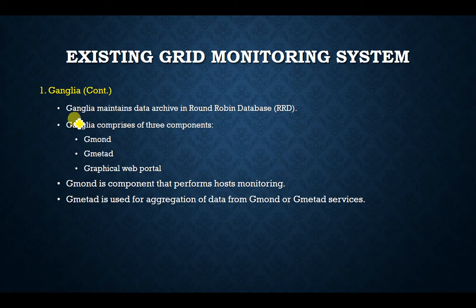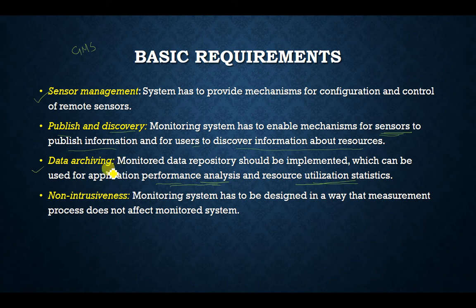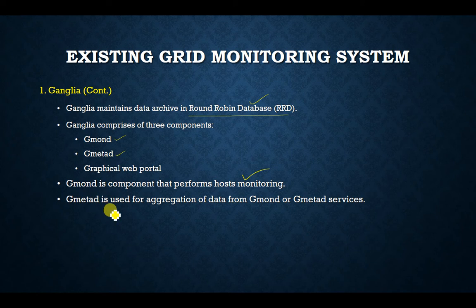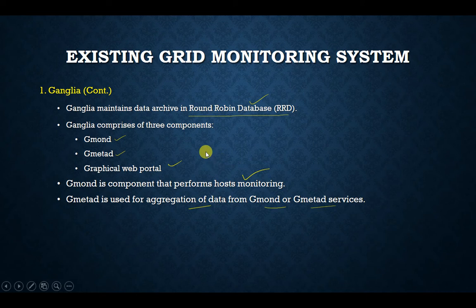Ganglia comprises three components: gmon, which performs host monitoring; gmetad, used for aggregation of data from gmon or gmetad services; and a graphical web portal through which users can interact with the grid monitoring system.